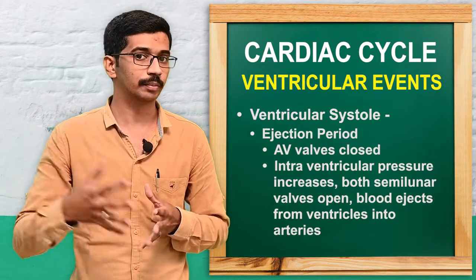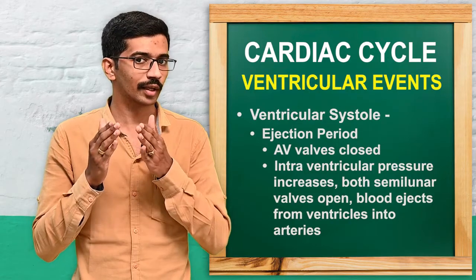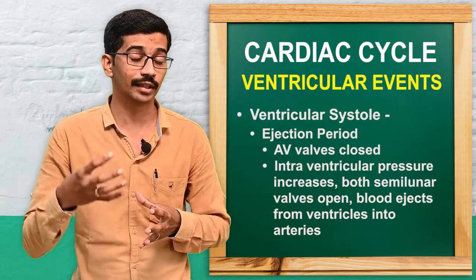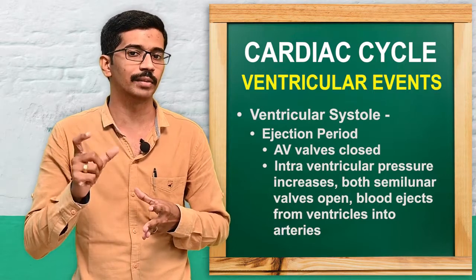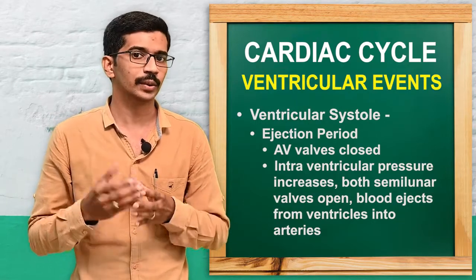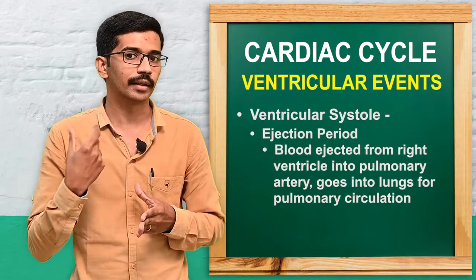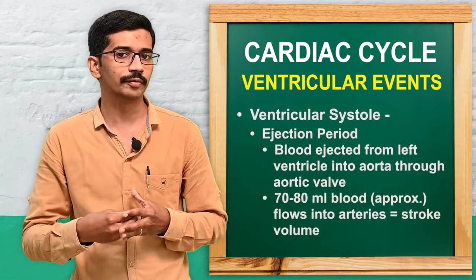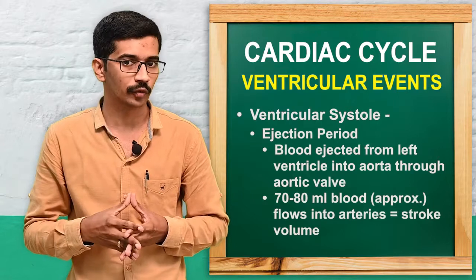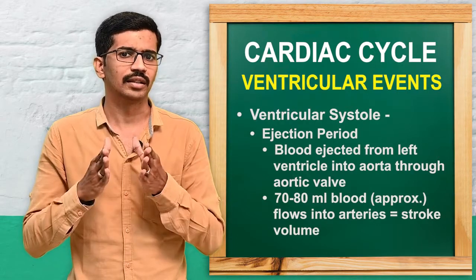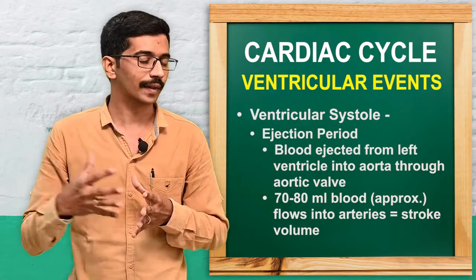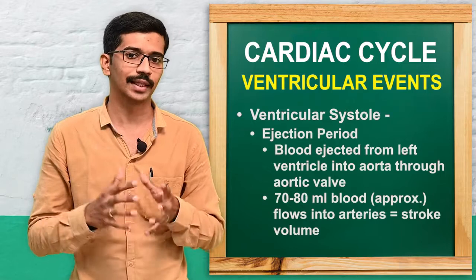In the ejection period, the atrioventricular valves are closed and the intraventricular pressure increases. As a result of this increased intraventricular pressure, both semilunar valves open and blood is ejected from the ventricles into the arteries. From the right ventricle, blood flows into the pulmonary artery for pulmonary circulation, and from the left ventricle, blood flows into the aorta through the aortic valve. Around 70 to 80 ml of blood flows into the arteries, which is termed the stroke volume.